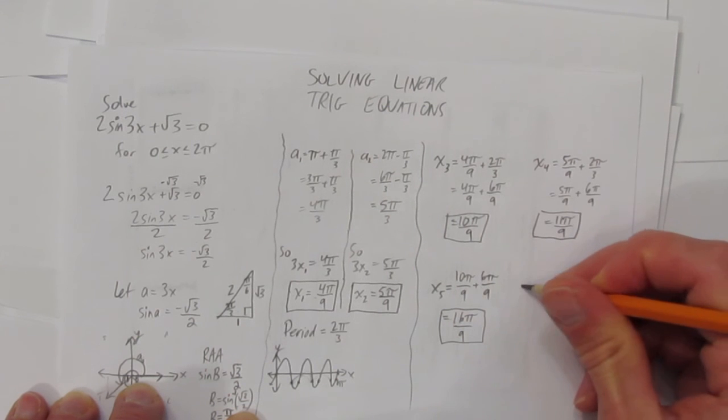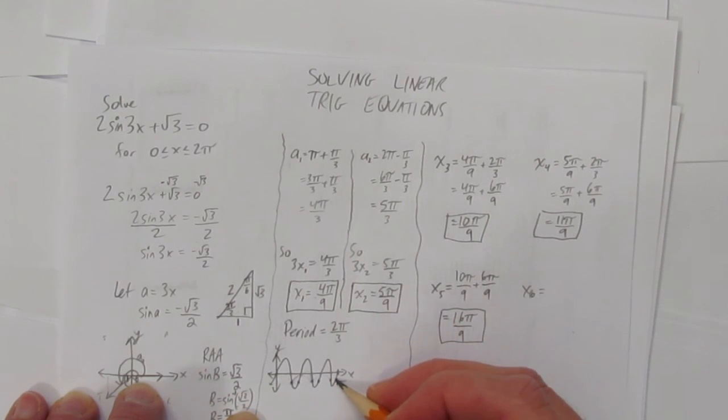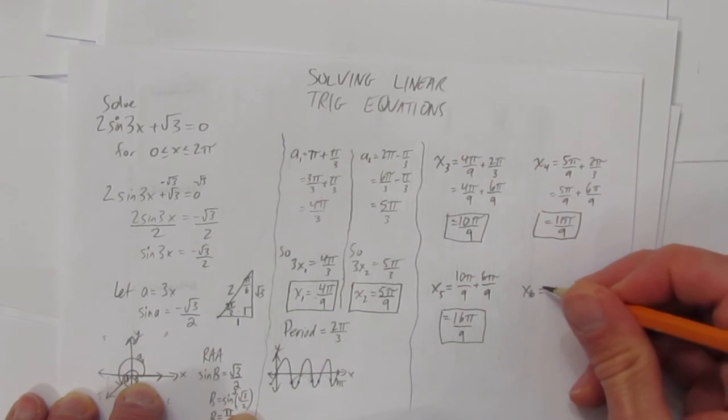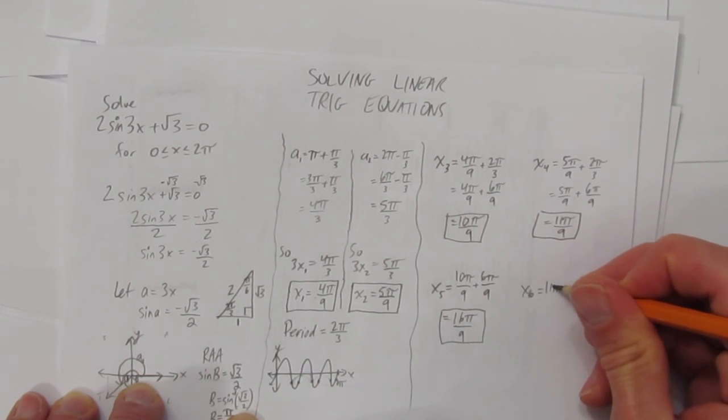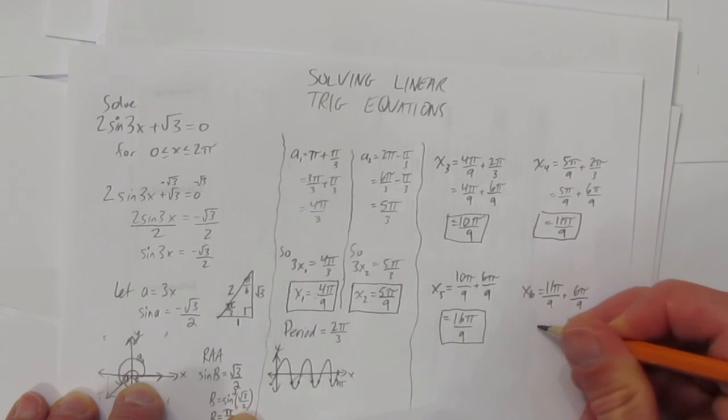One more, it's x6. Where is x6? It is one period ahead of where x4 was. So take x4 and add on the period. And again, just write it as a fraction out of 9, which is 6π/9, and you get 17π/9. Six solutions corresponding roughly to these six points.